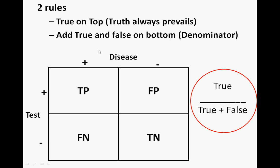The disease is either positive or negative, and the test is either positive or negative. A true positive means a person who has a positive test result has the disease — it's true, it's positive. A false positive means the test was positive, but you actually didn't have the disease, so it was a false positive on the test.